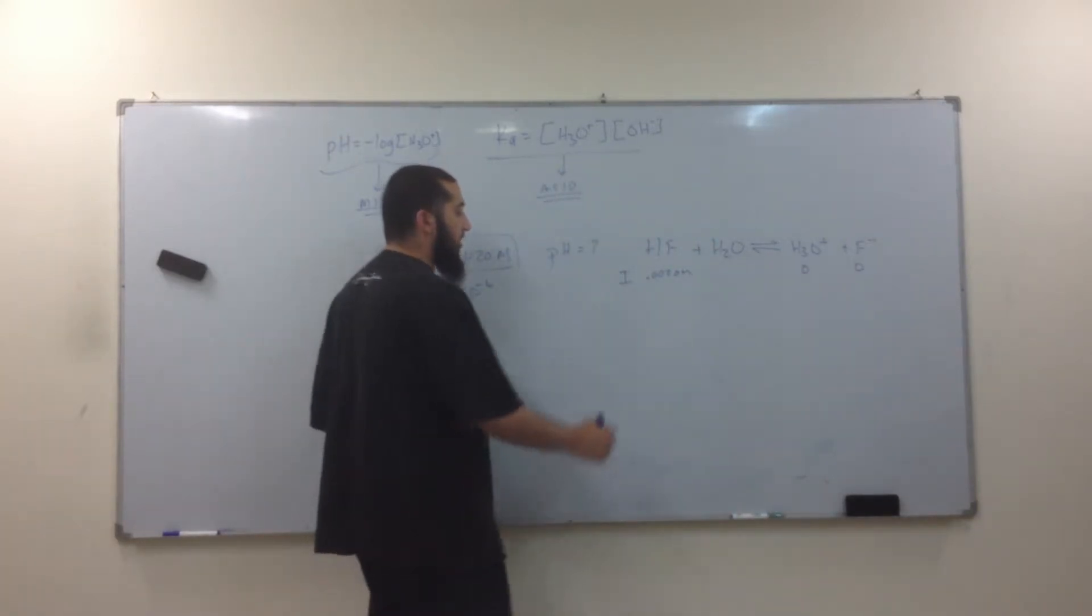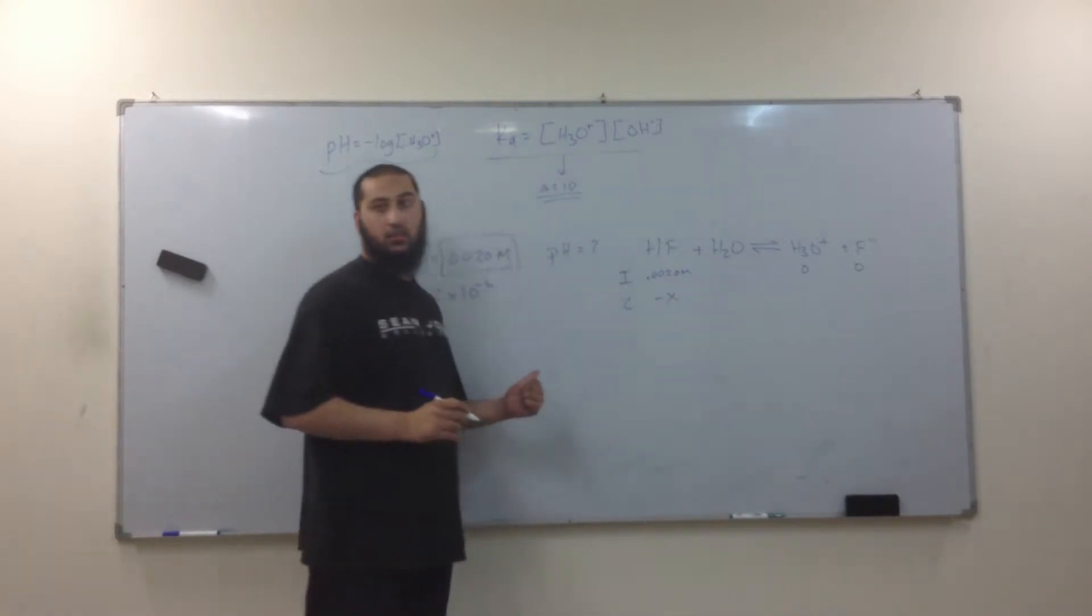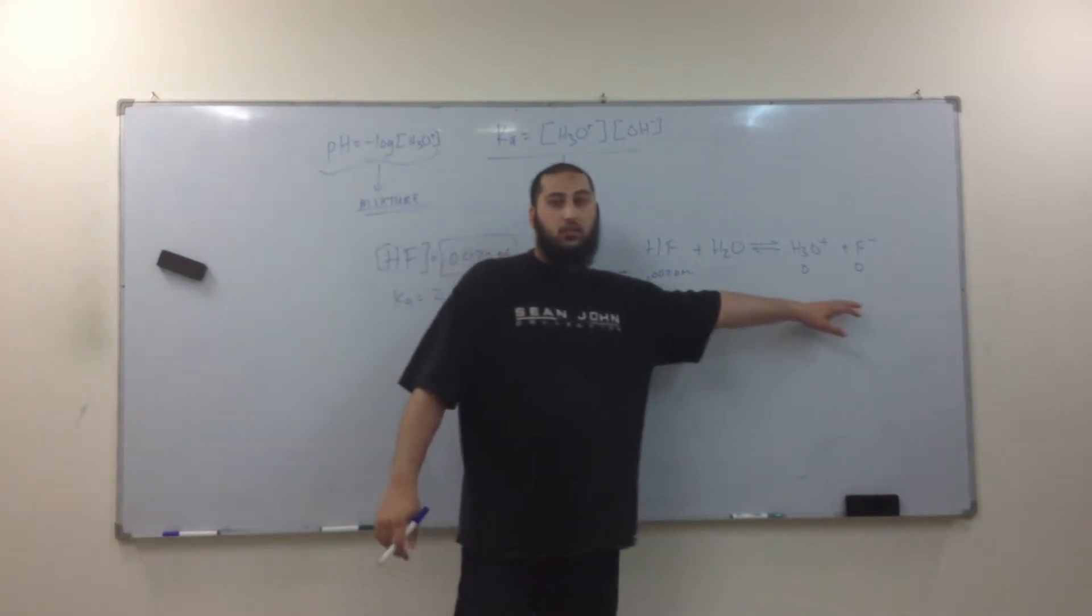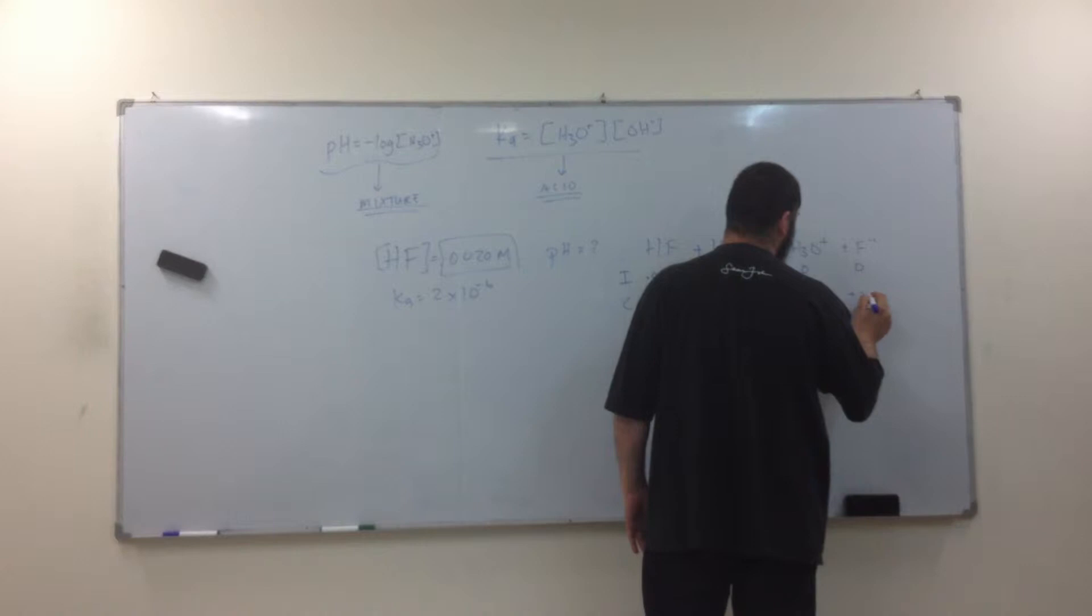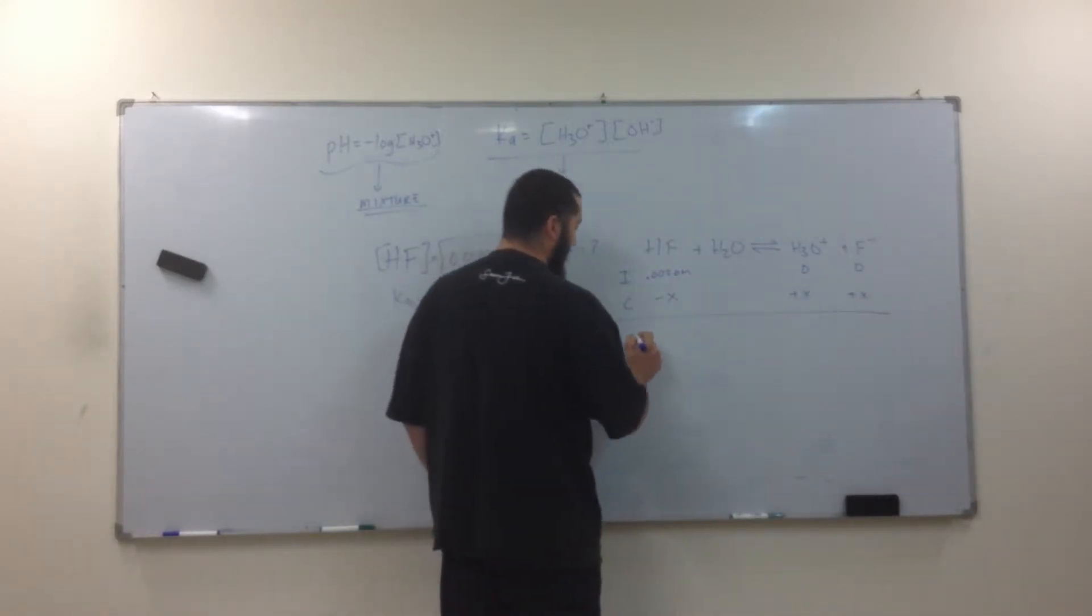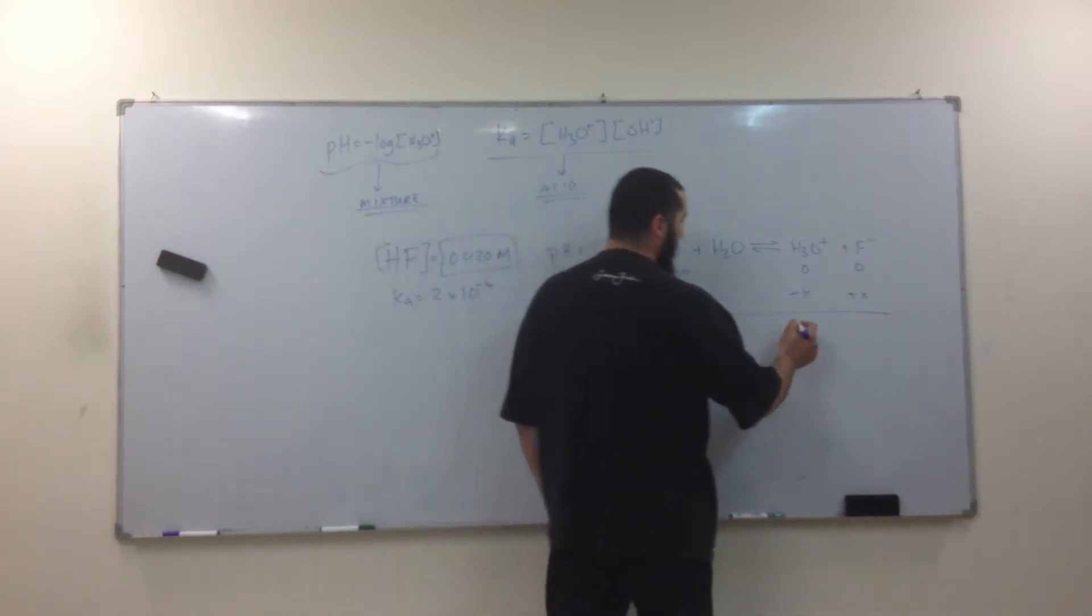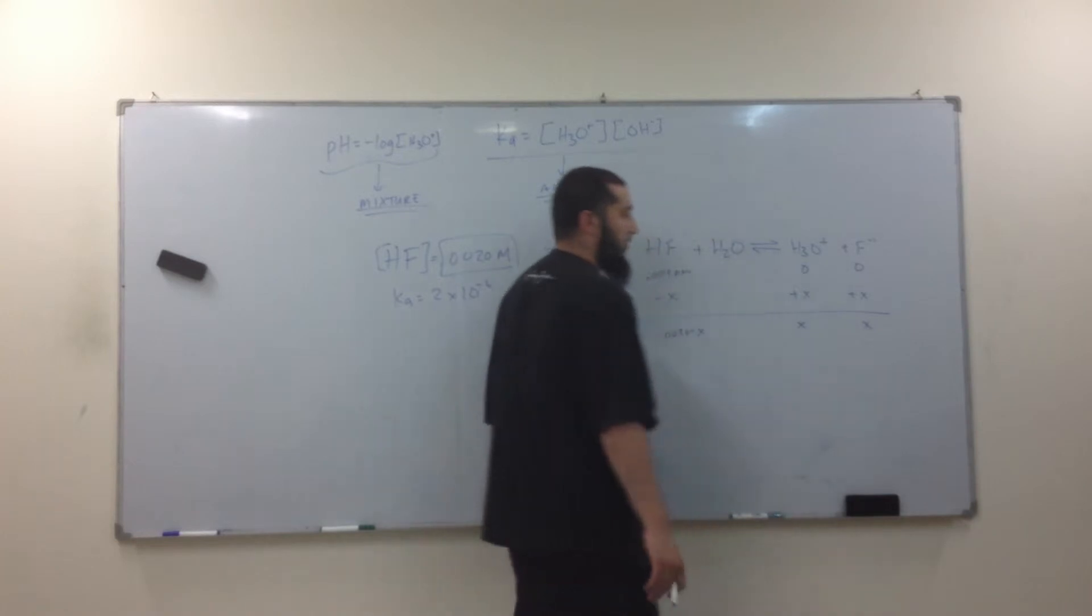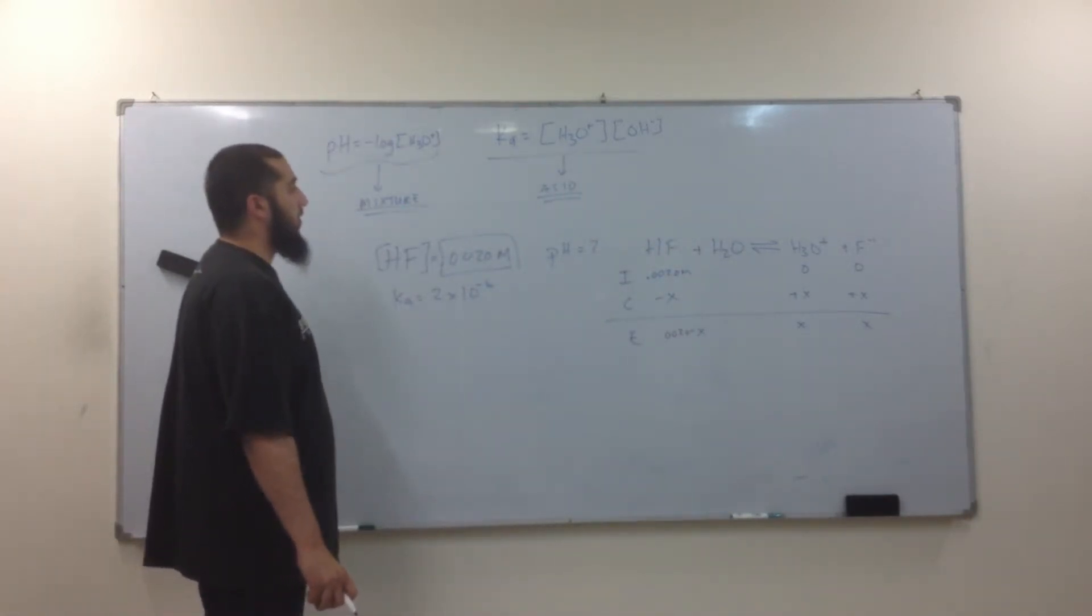Now what's my change going to be? Minus X. Minus X here. How about on this side? Plus. Plus X and plus X. And what's my equilibrium? 0.0020 minus X. This is X and this is X.